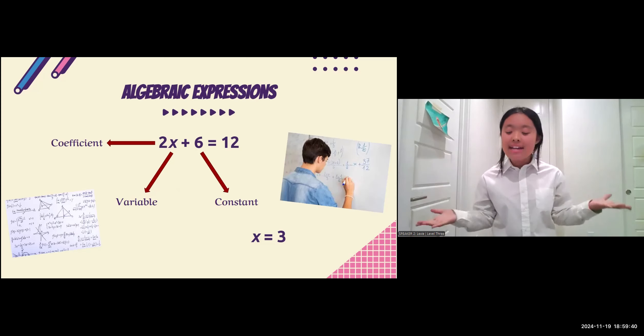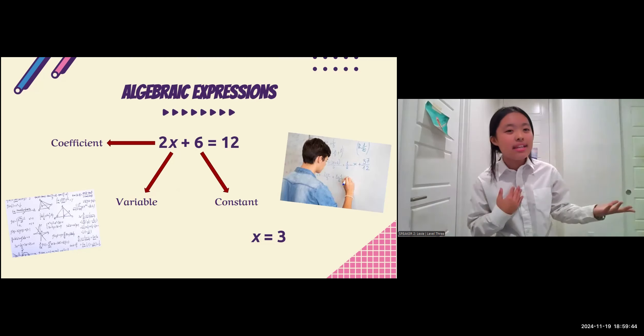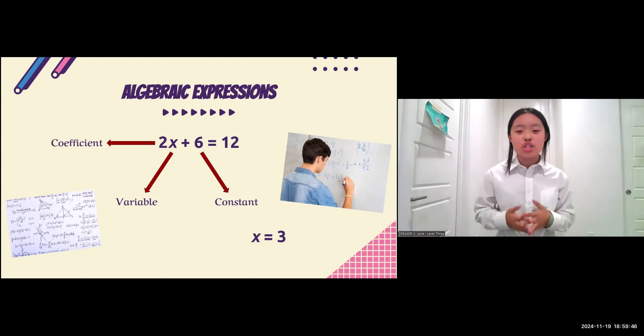And finally, last but not least, we have the constant, which is, in my opinion, the most easy to understand. The constant is just the number that isn't attached to any variable. And in this equation, the constant would be the number 6.